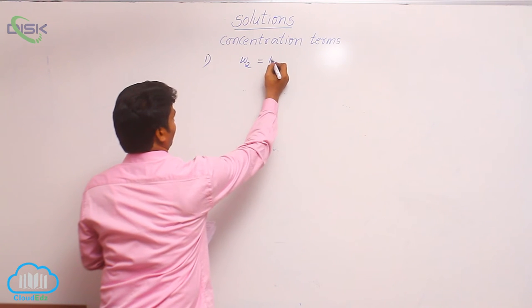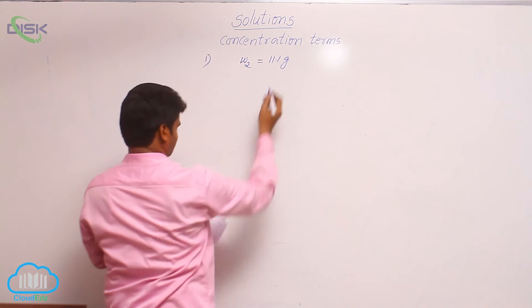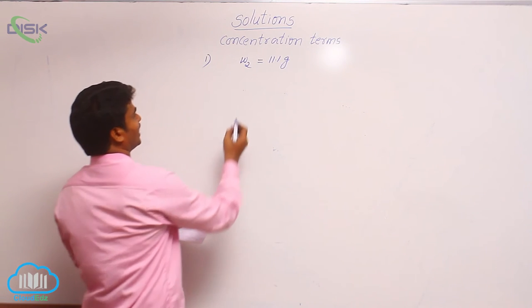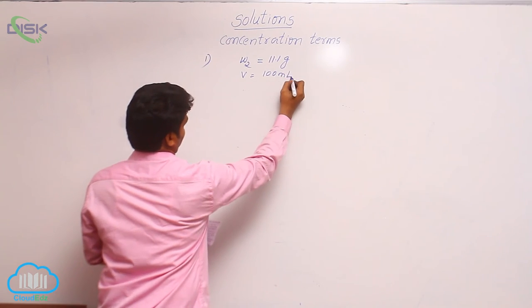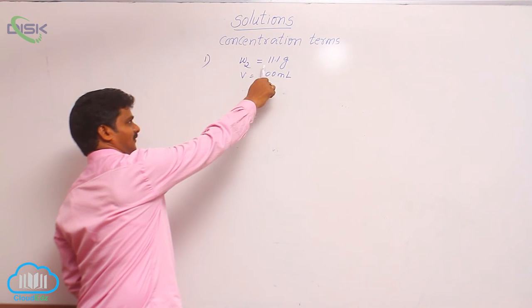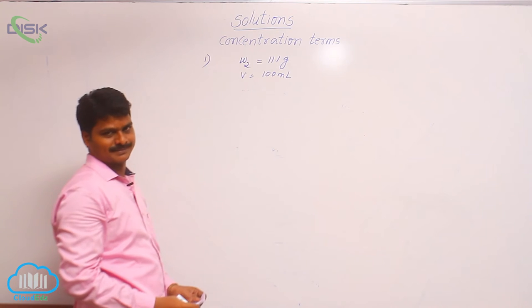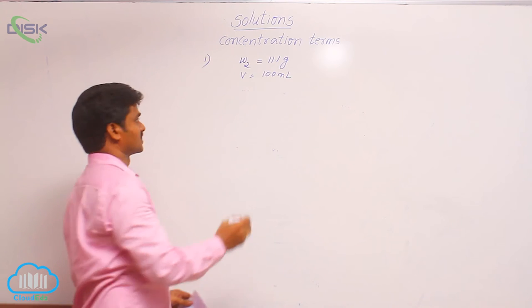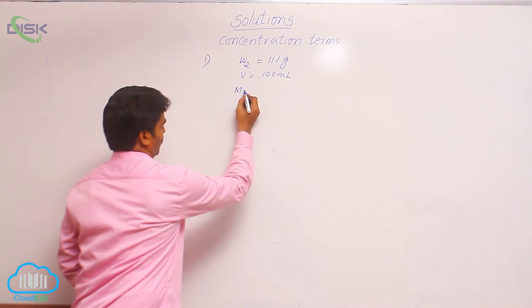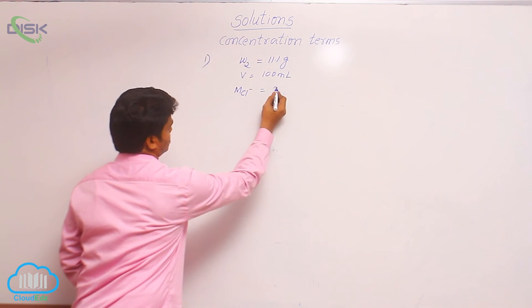That means W2 is given - 11.1 grams. Next, volume of solution is given - 100 ml. So here weight of solute is 11.1 grams, volume of solution is 100 ml. Chloride ion concentration is asked. That means molarity of chloride ion - how much?